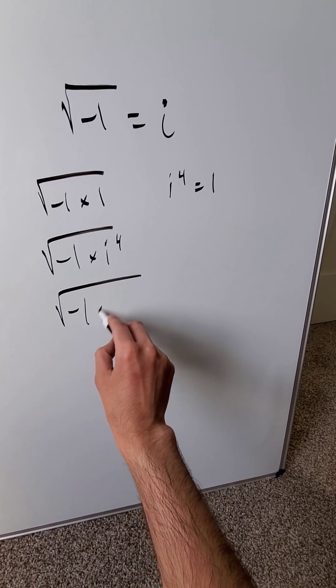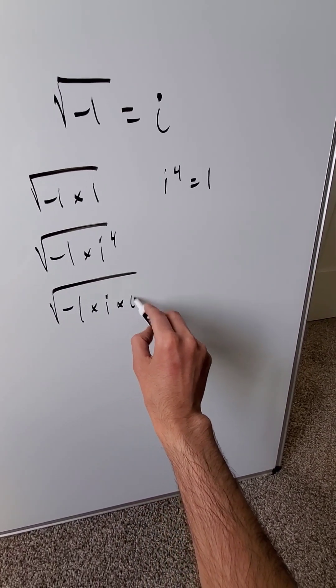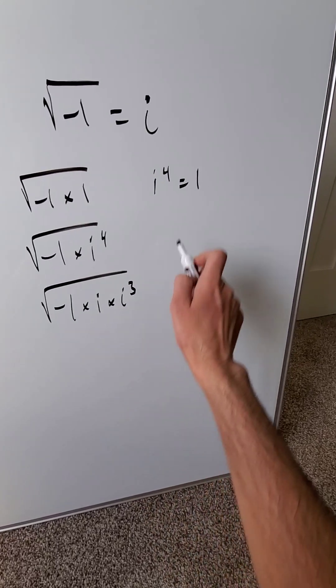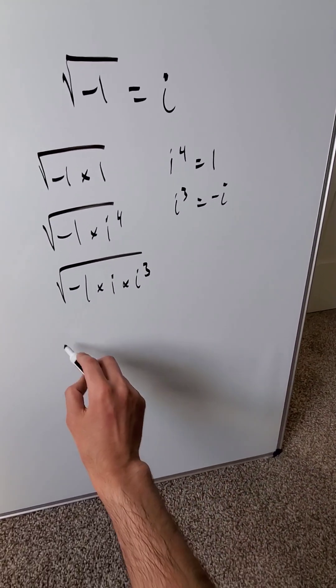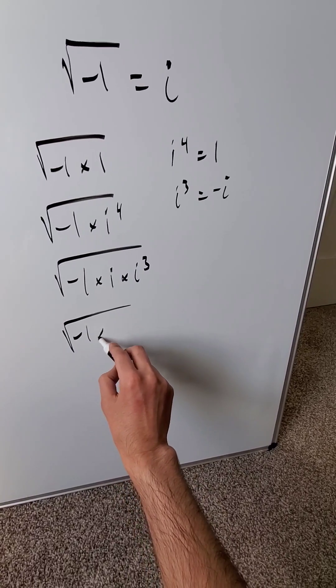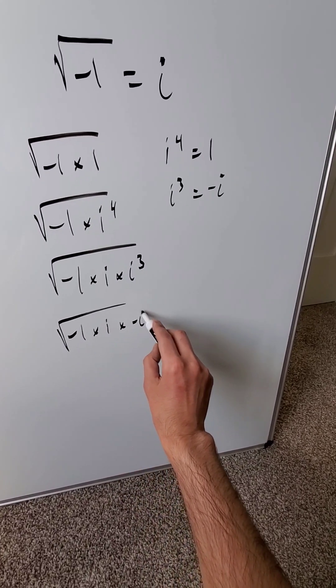Rewrite it. We're looking at square root minus 1 times i times i cube. I know also i cube is equal to minus i. Bring that computation in. I'm looking at square root of minus 1 times i times minus i.